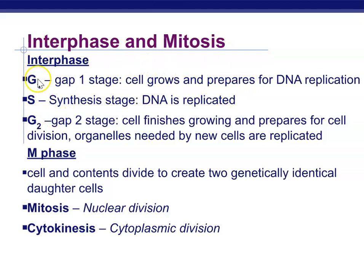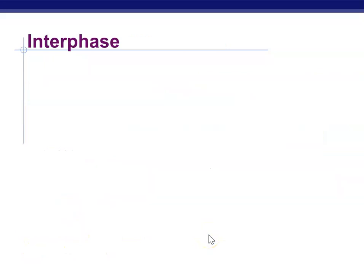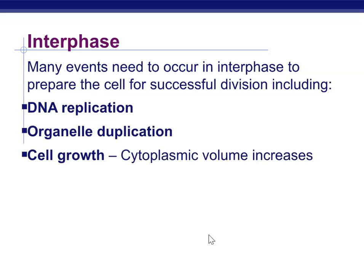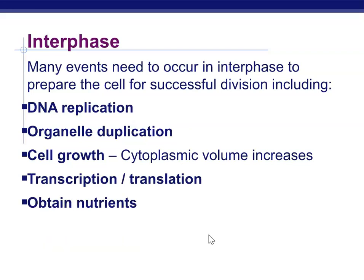Interphase encompasses G1, S, and G2. In that G1 stage, the cell is growing and preparing for replication. In synthesis (S phase), the DNA is replicated — it's a big job. Then G2 is where the cell finishes off and prepares for cell division. In mitosis, the nucleus is dividing along with all of the DNA. Cytokinesis, usually added into that mitosis phase, is where the cytoplasm is divided. Interphase involves DNA replication, organelle duplication, cell growth, transcription and translation of important proteins, obtaining nutrients, and respiration to generate ATP.